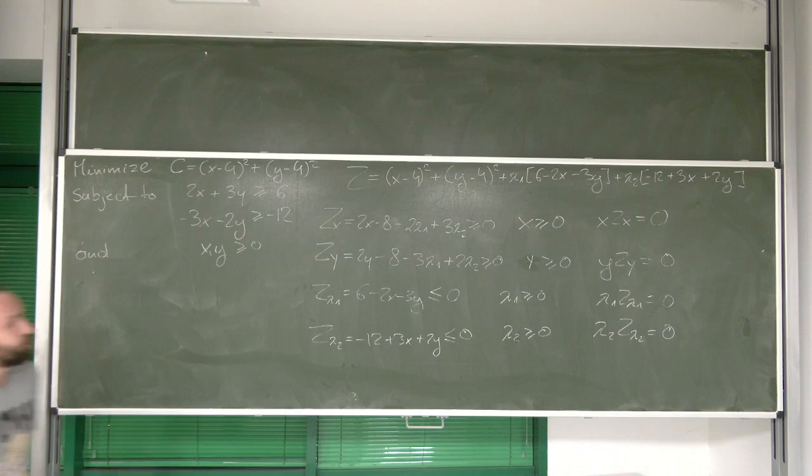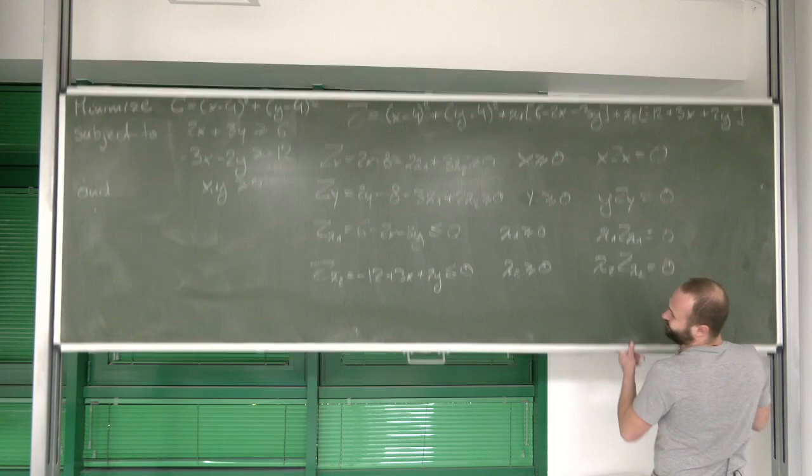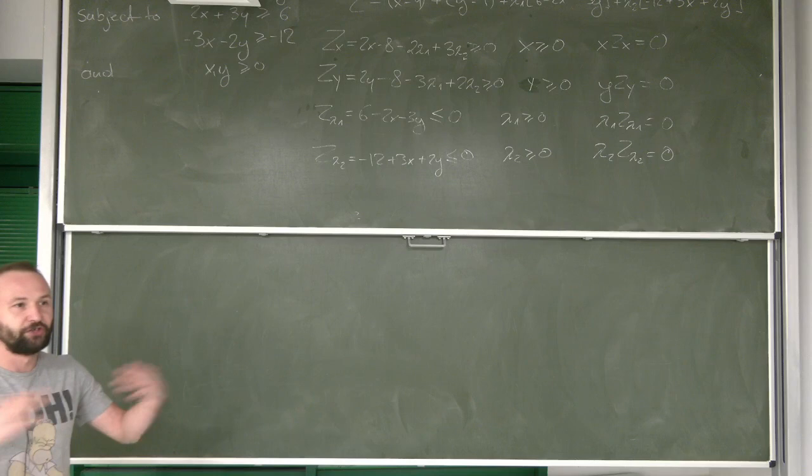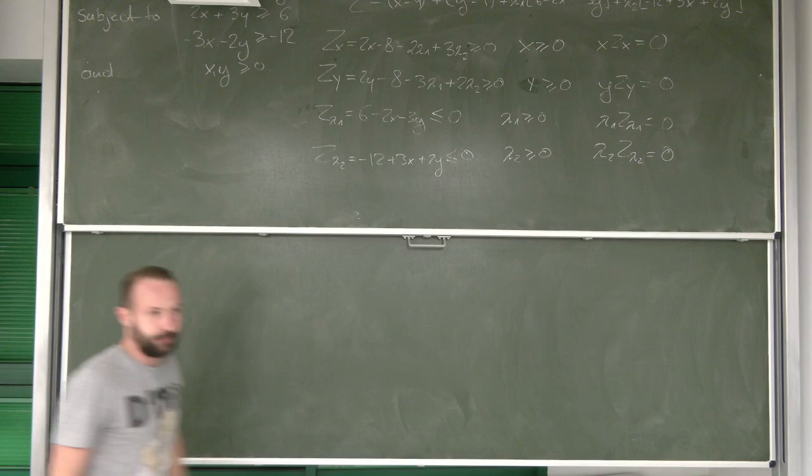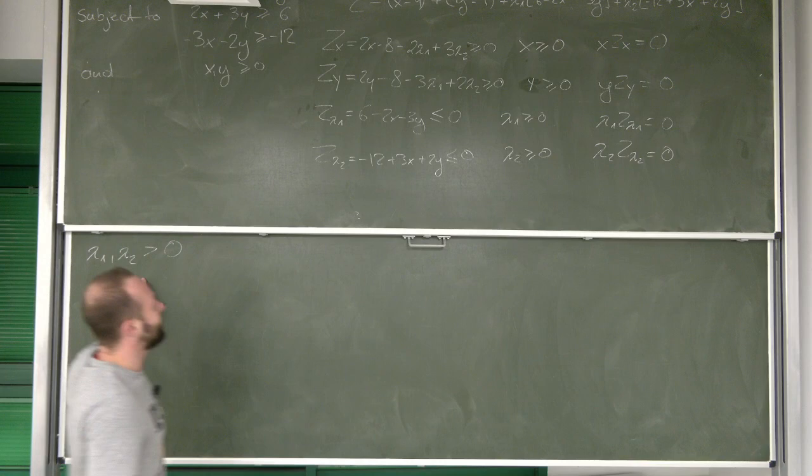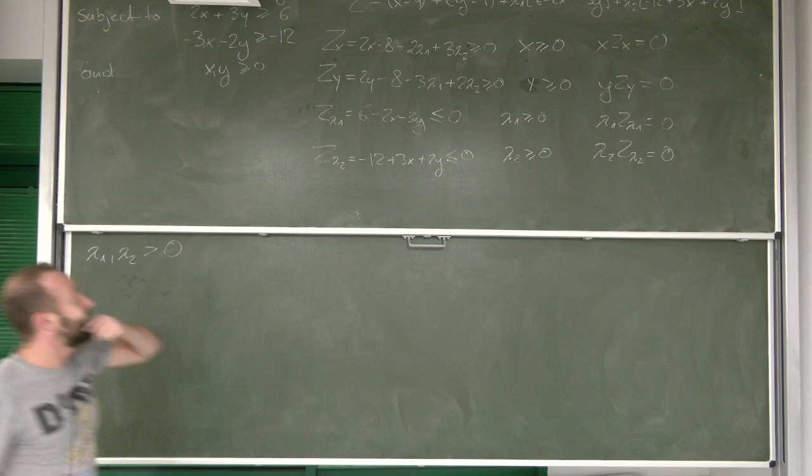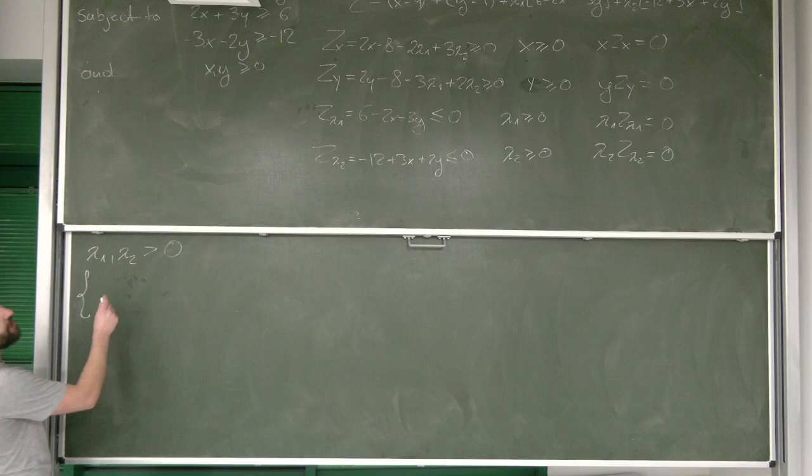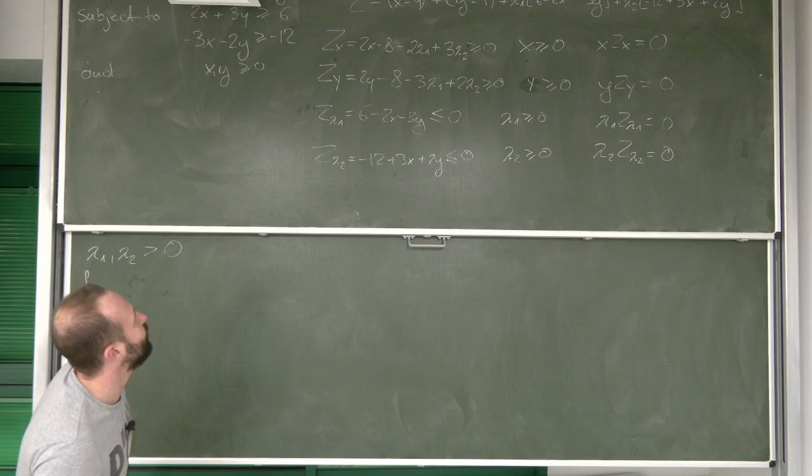Okay. With those conditions, we can start our trial and error approach. What can we start? Maybe a good idea to start would be to assume that both conditions are binding. In those cases, we would get both lambda 1 and lambda 2 being bigger than 0. And look, under this condition, if both conditions are binding, we can use the two equations over here to build a system, right? And out of this system, we should be able to calculate what is going to be x and y.